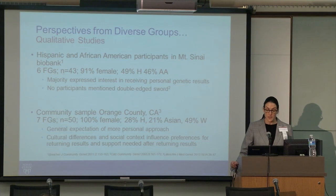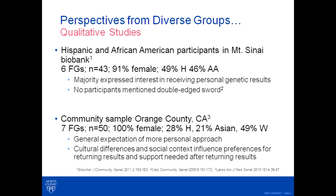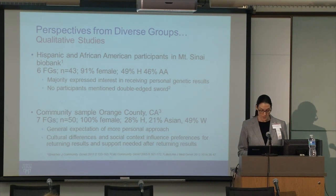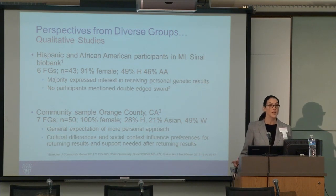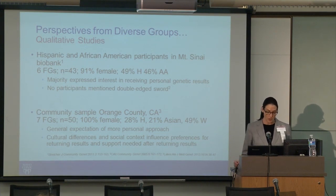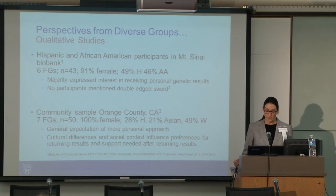In a study examining reasons for participating in the Mount Sinai biobank, researchers looked at African American and Hispanic participants. There were six focus groups totaling 43 individuals — a majority female, 49% Hispanic and 46% African American. The majority expressed an interest in receiving personal genetic results. No participants mentioned the double-edged sword seen in earlier studies — that while genetic testing can lead to prevention of disease, it could also be used unethically, cause anxiety, or provide false reassurance.